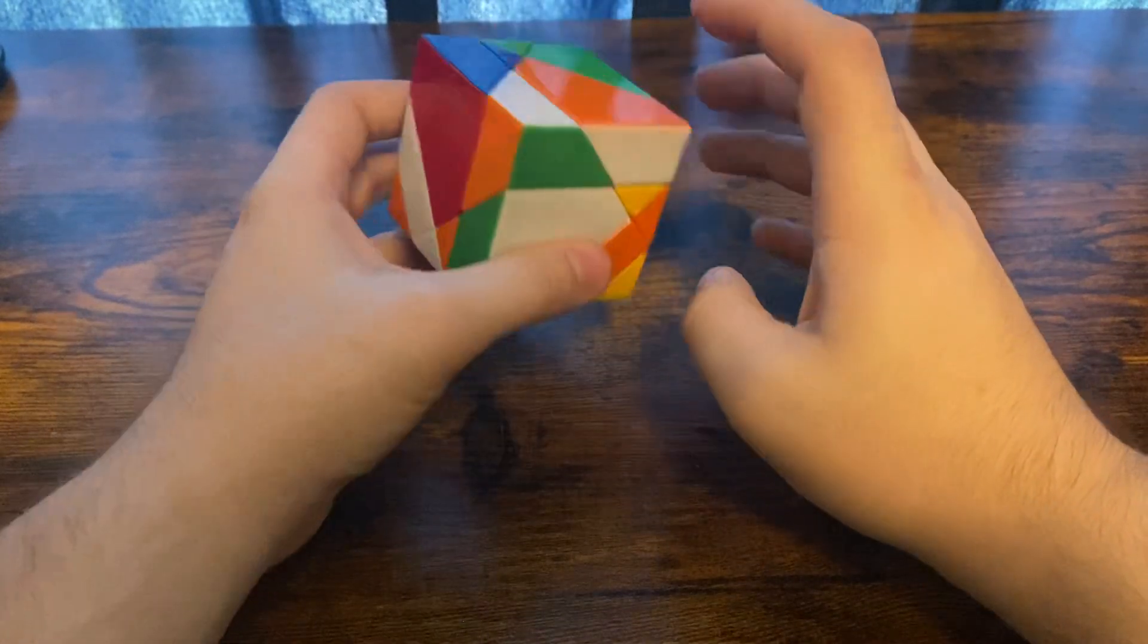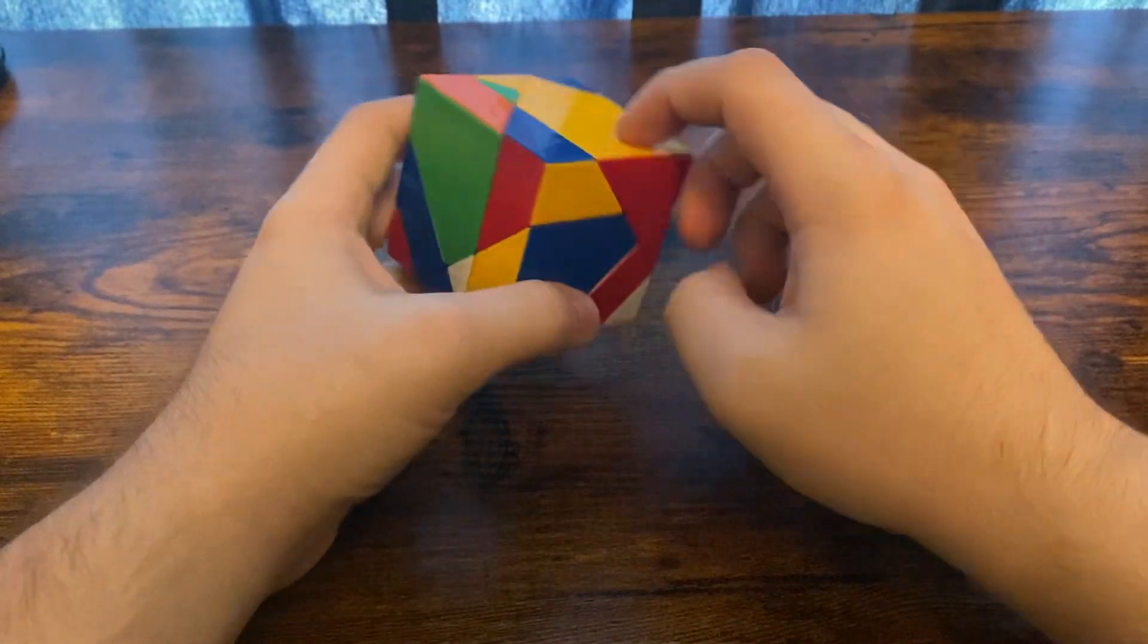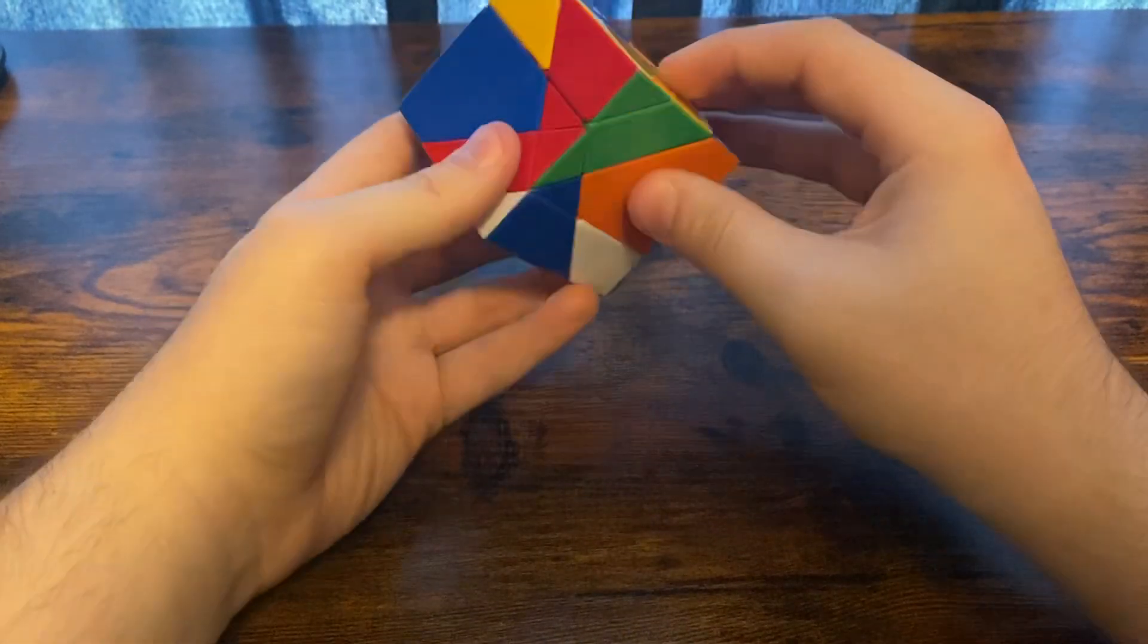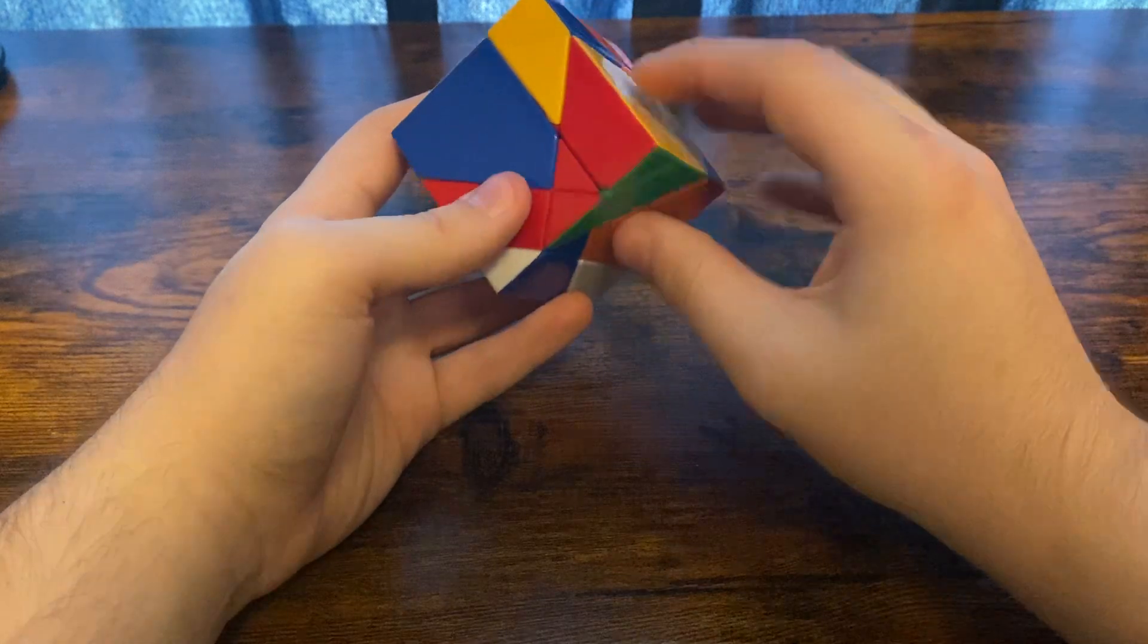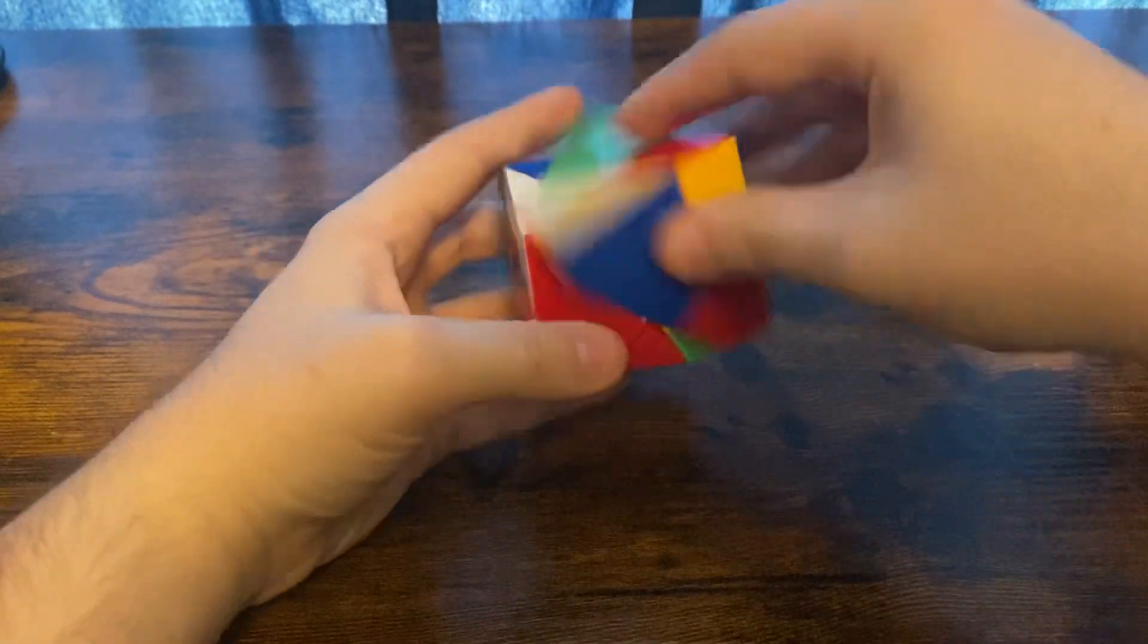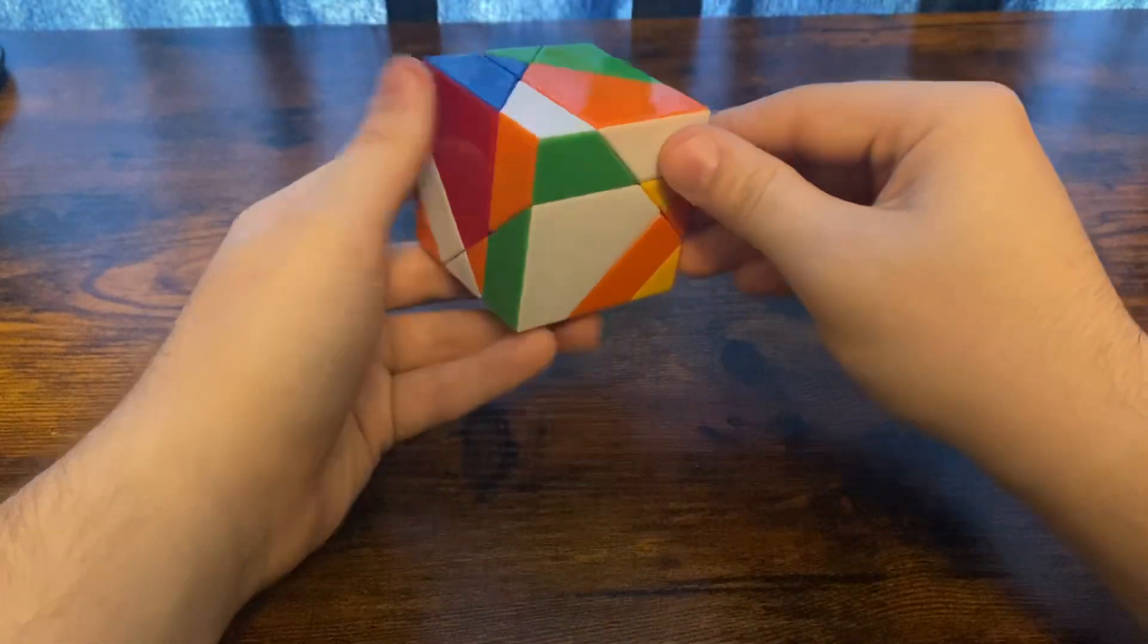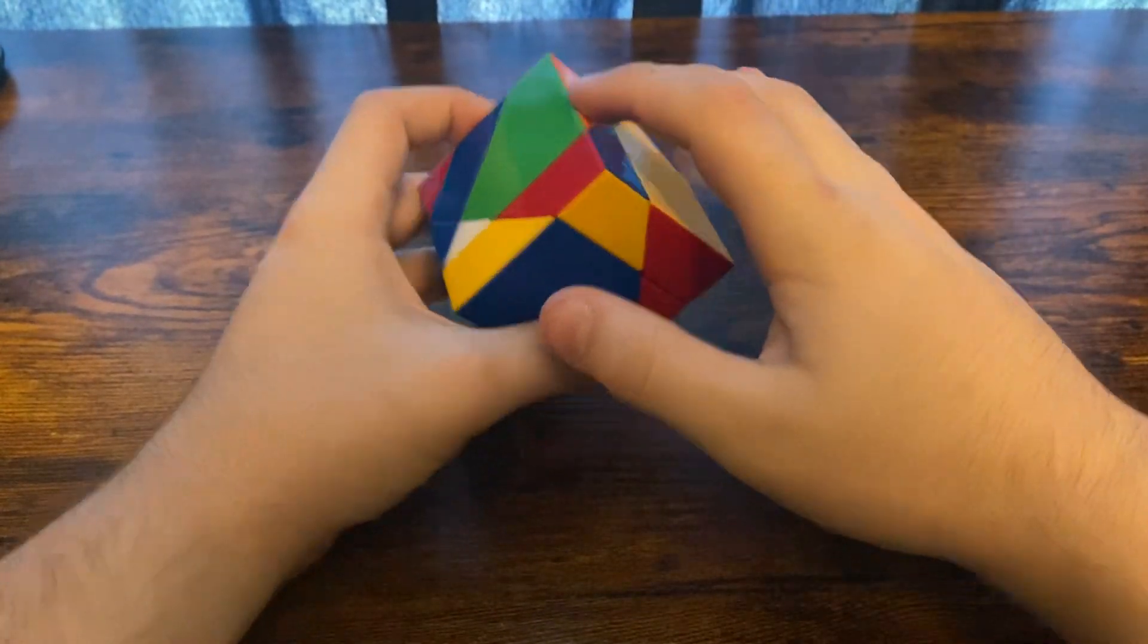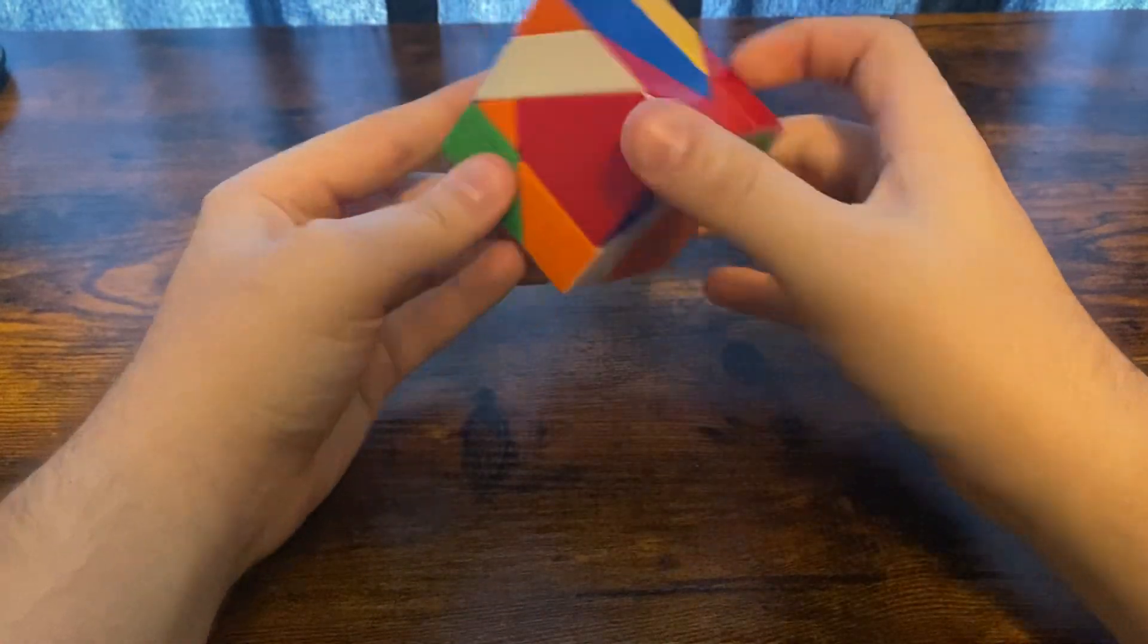Next up, we're going to solve these big chunky edges. We're going to do so by using a mixture of edge and corner turns. We're going to start with this layer.